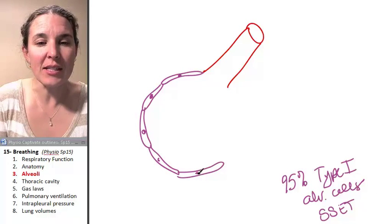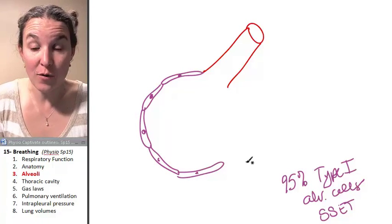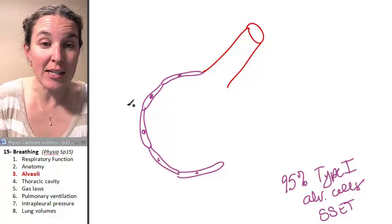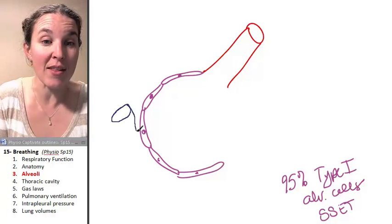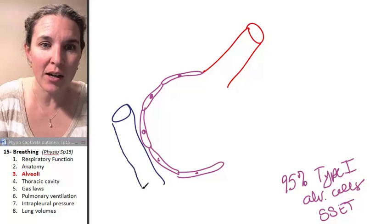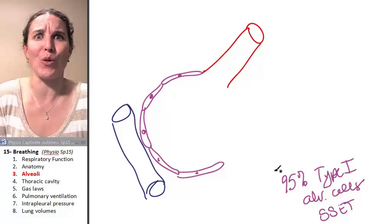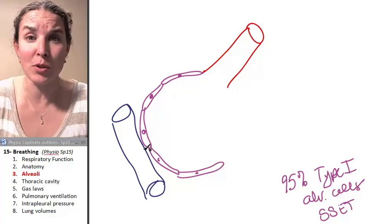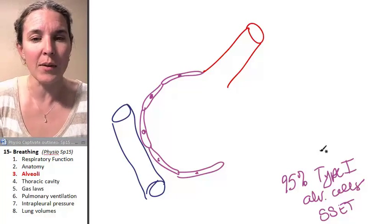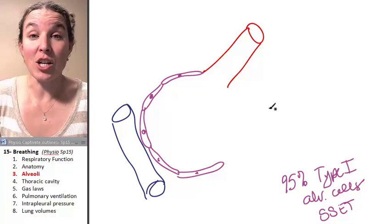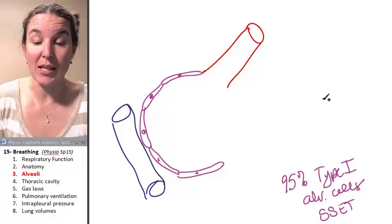Look how thin these things are. Thank you for being so thin. And in fact, what you'll find is that they're so thin, and they're right next to a capillary, which the capillary we learned in the last lecture is so thin, lined by simple squamous epithelium, called endothelium, that gas exchange is going to happen super quick between these things.